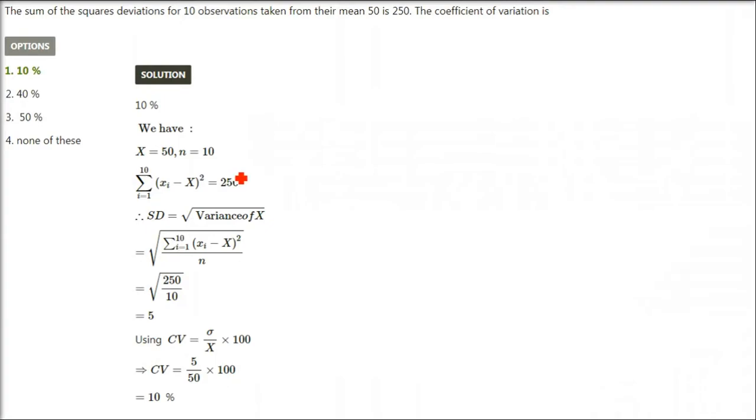The sum of the squares deviations from 10 observations taken from their mean 50 is 250. The coefficient of variation is how much percent? For that we have to use an expression which is sigma (the standard deviation) divided by the mean and multiplied by 100.